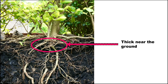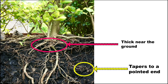This part of the plant growing below the soil for support is called the root. Another function of the root is to absorb minerals and water from the soil. Different plants have different types of roots.